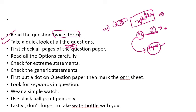So first, take a quick glance and look at all the questions. You will get a little understanding of the paper's level. Also, check all the pages of the question paper — this is very important, because sometimes some pages are missing or there can be a misprint. Make sure all serial numbers and everything are properly printed. If you have solved half the paper and then notice questions are missing, you won't be able to do anything.